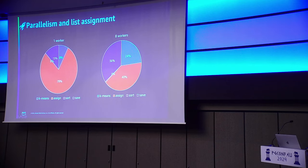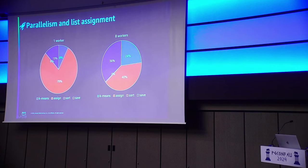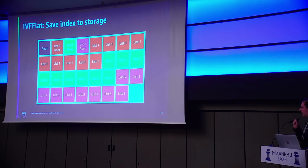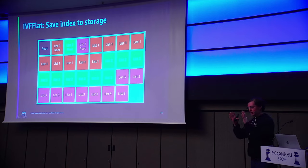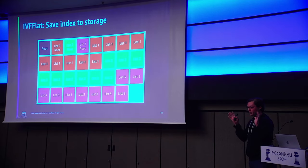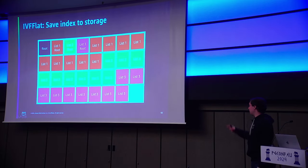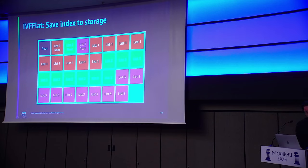One thing to note with IVF flat: the disk layout does kind of matter. Because you're building everything up front, it's all going to be relatively ordered on disk — all your similar vectors in a list are going to be in the same portion of the disk. Now, you might think: what happens if I add a new vector to the index after I build the index? Well, it's just going to be adding it to the end and it's going to be somewhat fragmented — but that's just the way it is.